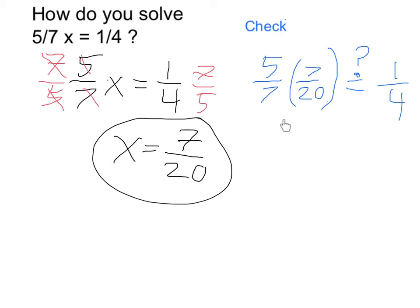I'm going to plug in 7 twentieths to my original, and I'm going to do 5 sevenths times, in this case 7 twentieths. And that, I see nicely, the 7s are going to cancel,